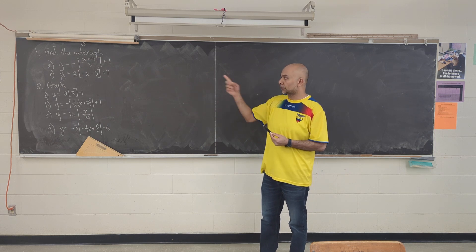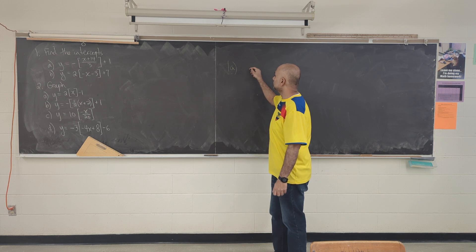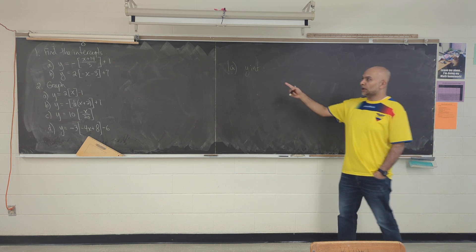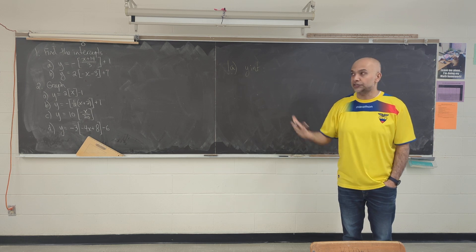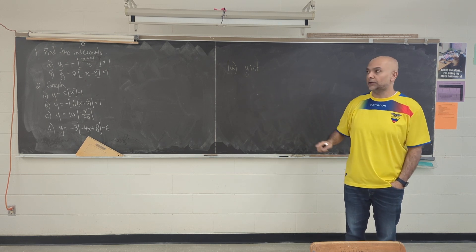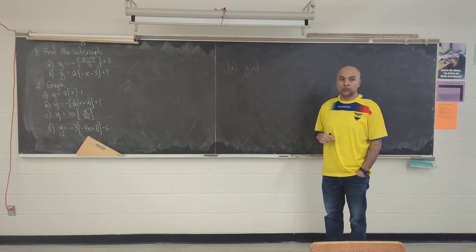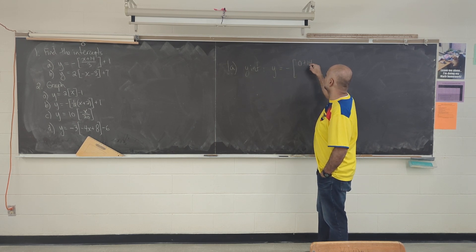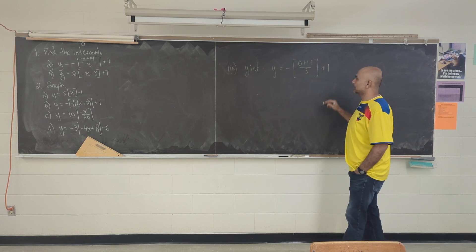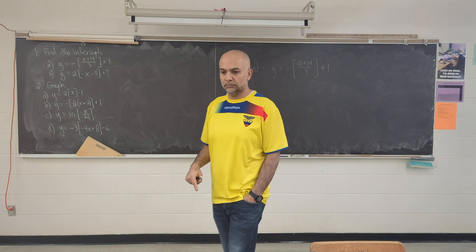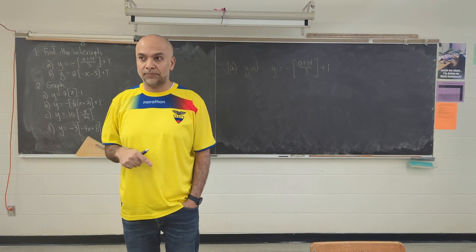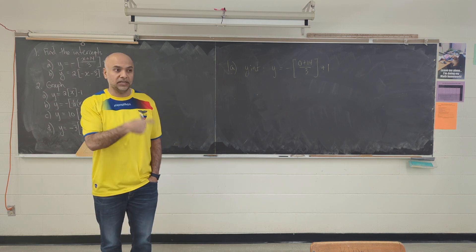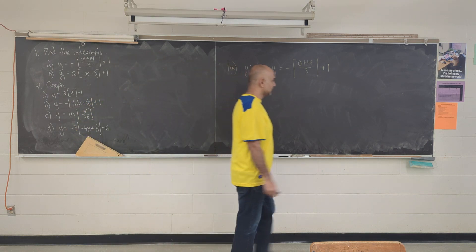Question number one is really our first lesson. Question number two is actually yesterday's lesson, so we'll quickly review what we talked about before. I'll start with 1a, and I'm actually going to start with the y-intercept first because I think it's the easier one. To find the y-intercept — every single time, whether it's a linear function, a quadratic function, or a GIF — what will always work is take your rule, and everywhere you see an x, replace it with 0.